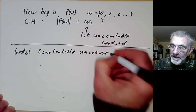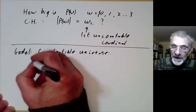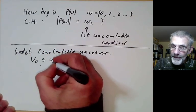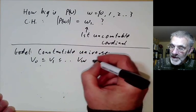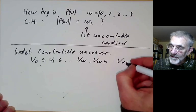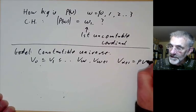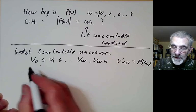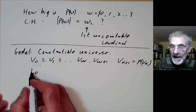First of all Godel looked at the universe at the constructible universe. So this is defined as follows. So the von Neumann hierarchy is defined like this. So you take this hierarchy of things where V alpha plus one is the power set of V alpha.